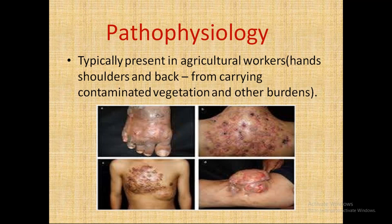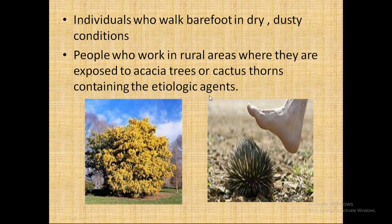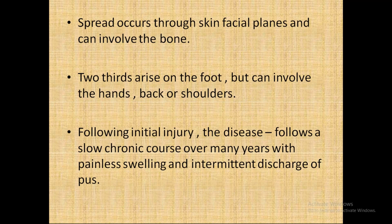The pathophysiology: mycetoma typically presents in agricultural workers, affecting hands, shoulders, and back from carrying contaminated vegetation. Individuals who walk barefoot in dry, dusty conditions and those working in rural areas exposed to acacia trees or cactus thorns containing the etiological agents are at risk. Spread occurs through skin and fascial planes and can involve bone. Two-thirds of cases arise on the foot but can involve hands, back, or shoulders. Following initial injury, the disease follows a slow chronic course over many years with painless swelling and intermittent discharge of pus.